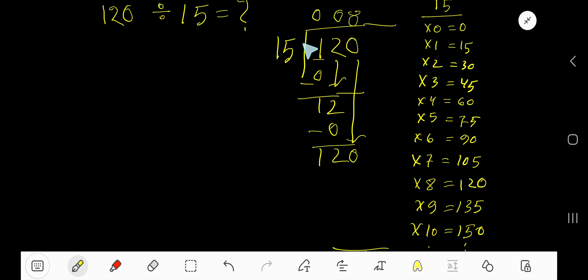Take here 8. Now you need to multiply. 8 times 5, 40. Write 0. Carry 4 to the next column. 8 times 1, 8. Plus 4, 12.